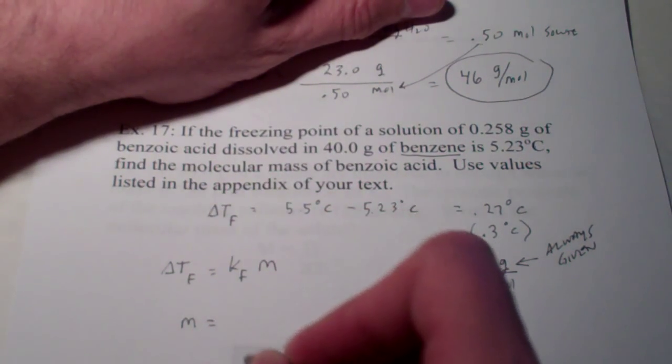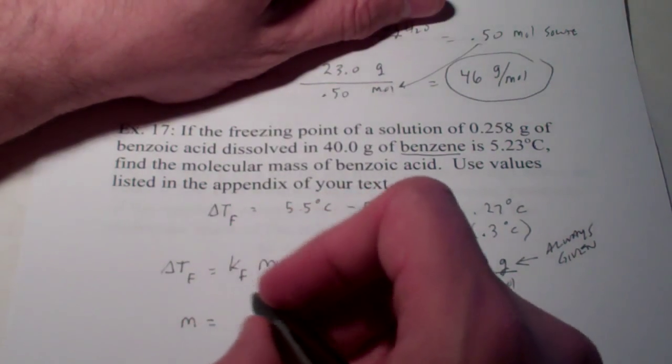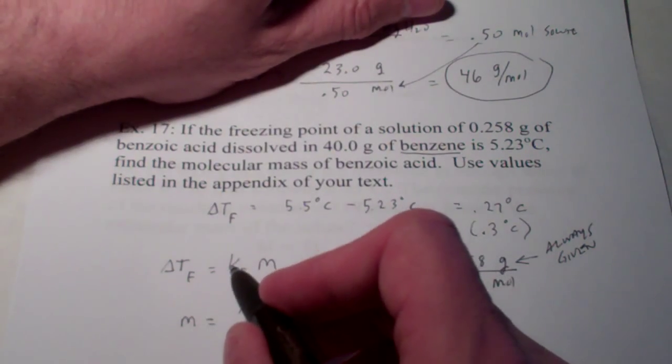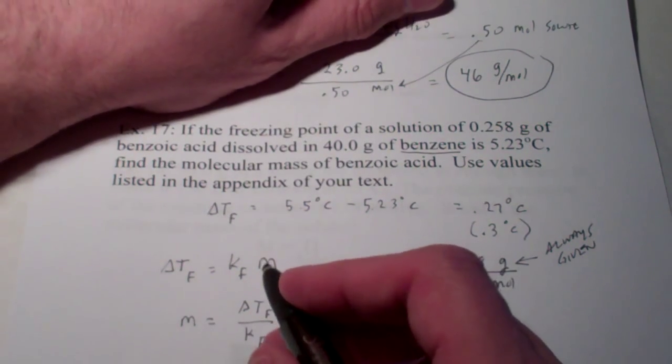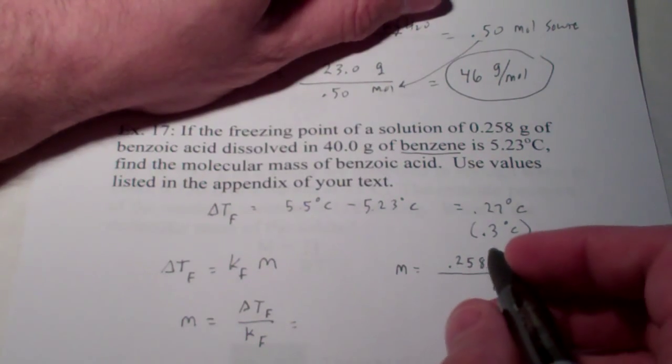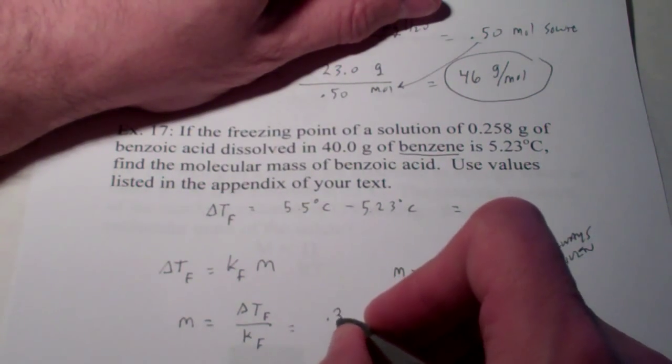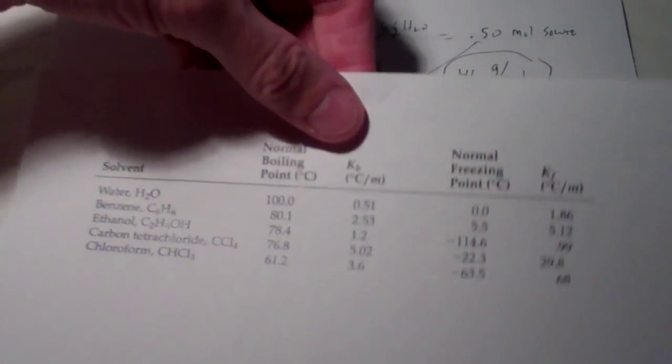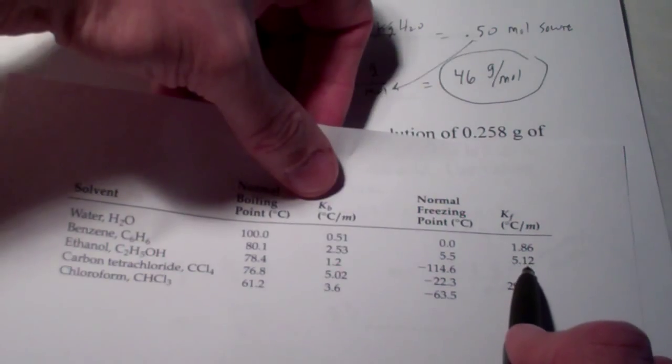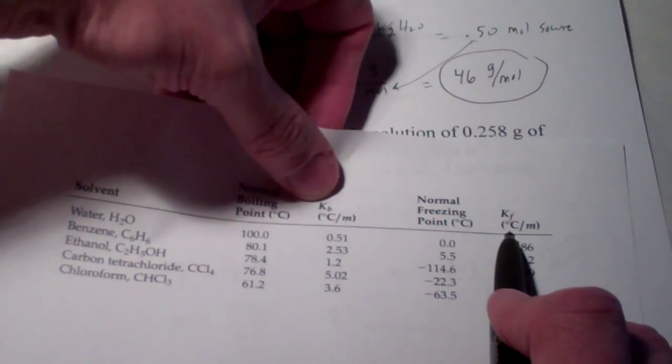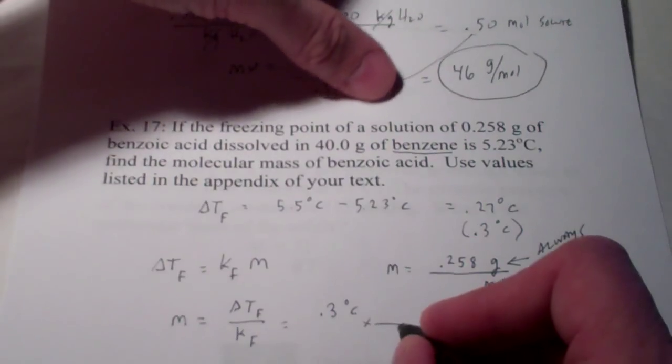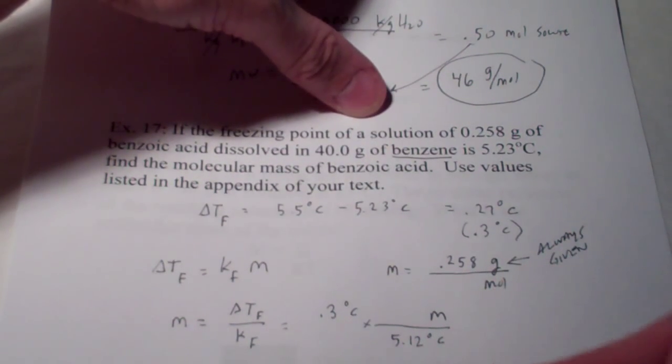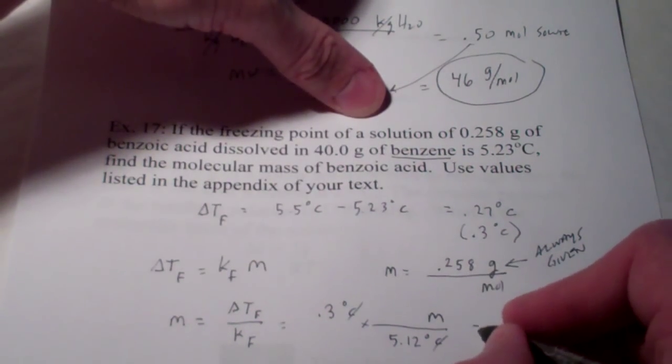Okay, if you said molality, you are correct. Molality would be the delta T sub F divided by the K sub F. Just bringing KF to the other side and solving for molality. In this case, our delta T sub F is our 0.3 degrees Celsius divided by our KF for benzene. And our KF for benzene is 5.12 degrees Celsius per molal solution. So, 5.12 degrees Celsius per molal solution. And degrees Celsius divide out.